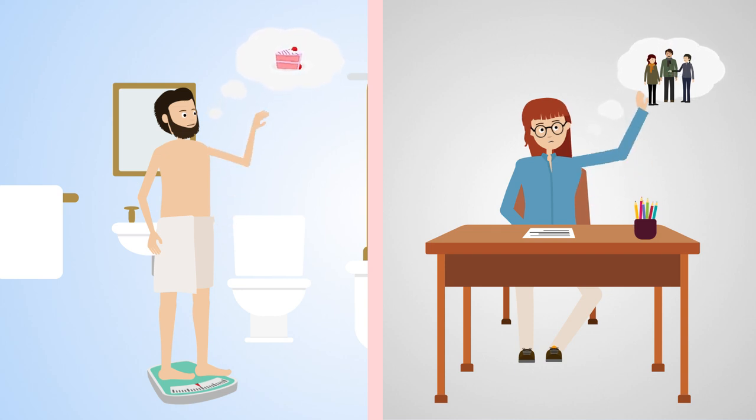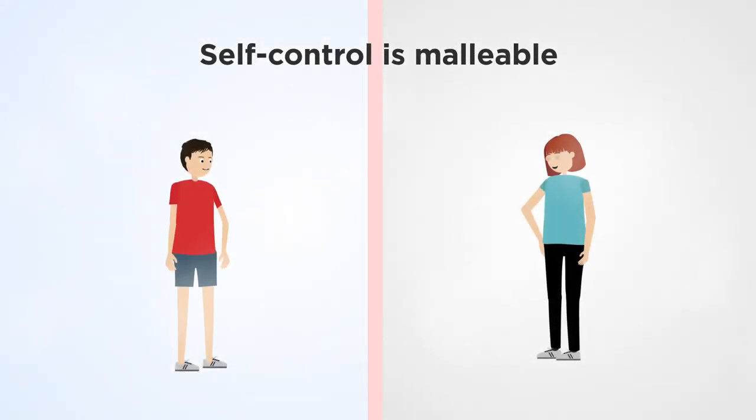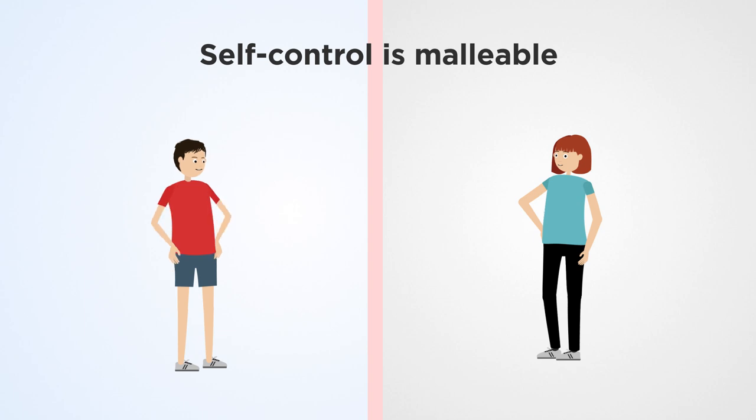If a person frequently fails to achieve their goals, it's likely due to low self-control. Self-control isn't fixed but malleable, and studies show that most people become more self-controlled through their adolescent years.